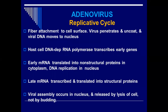The host cell's DNA-dependent RNA polymerase moves towards the nucleus and transcribes the early mRNA. These early mRNAs are translated into non-structural proteins in the cytoplasm. So the virus makes structural proteins in the nucleus, then comes out to the cytoplasm to make non-structural proteins, and then DNA replication takes place again in the nucleus.